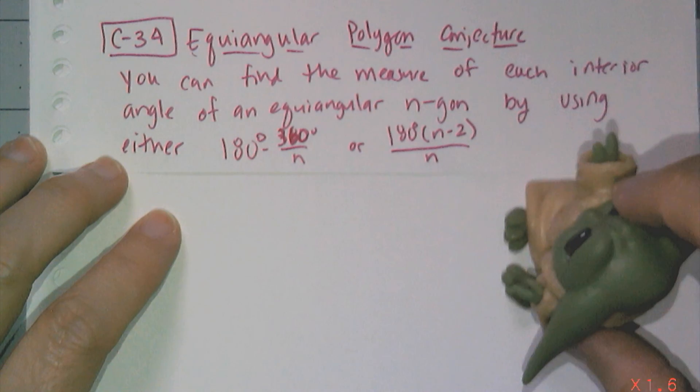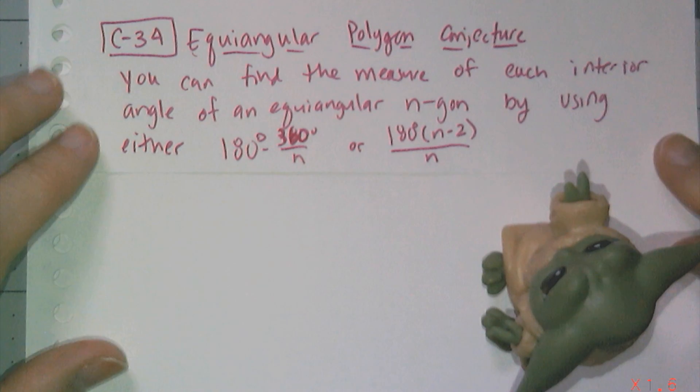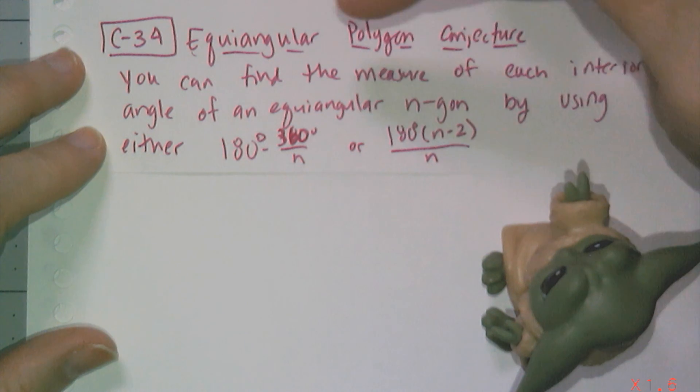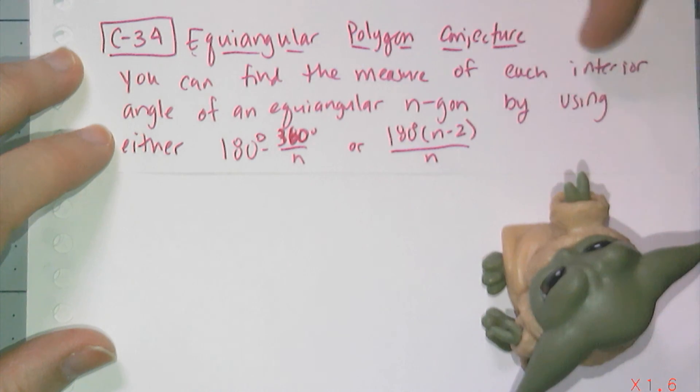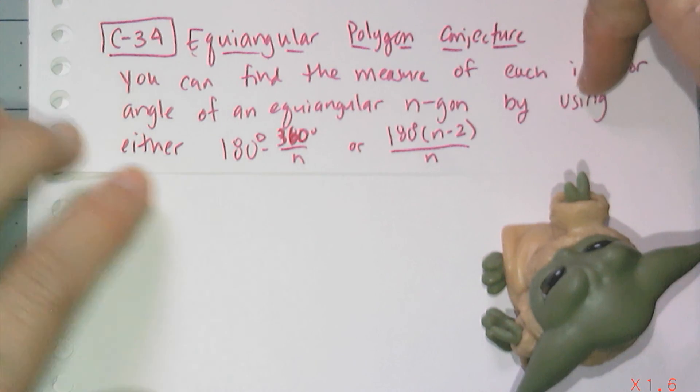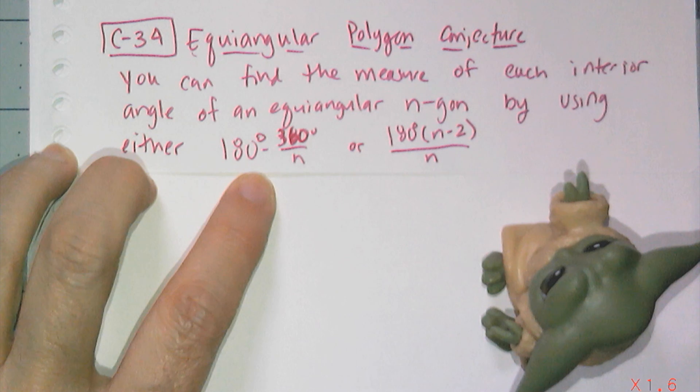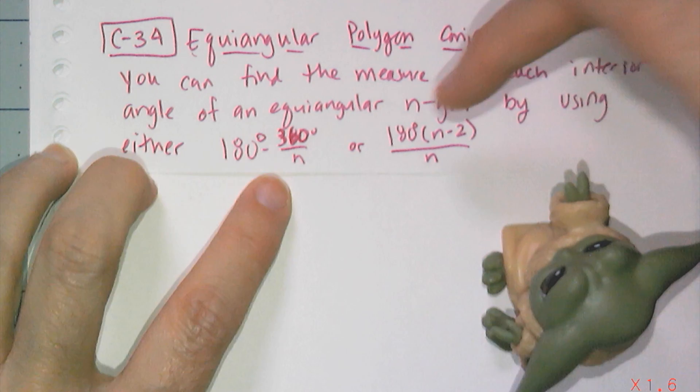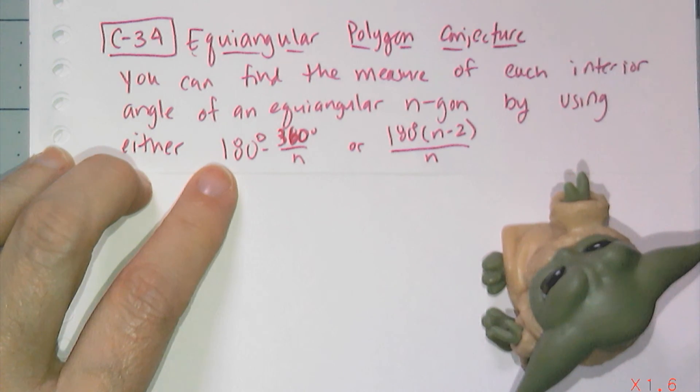And so, of course, we have to finish off with the official conjecture, C34. The Equiangular Polygon Conjecture says you can find the measure of each interior angle of an equiangular N-gon by using either 180 minus 360 over N or 180 times the quantity N minus 2 divided by N.